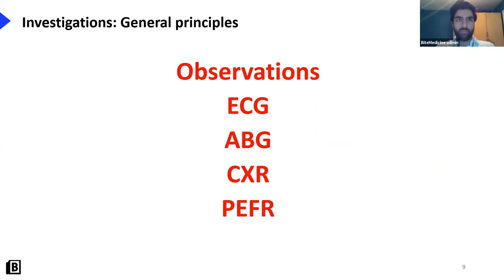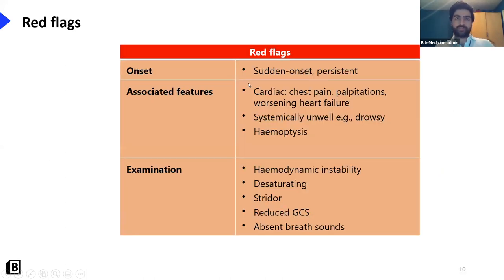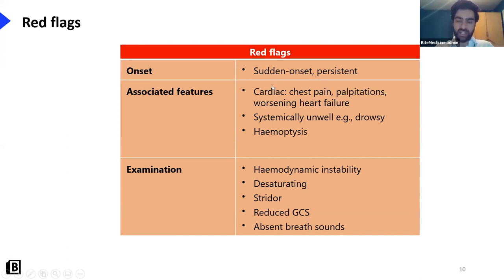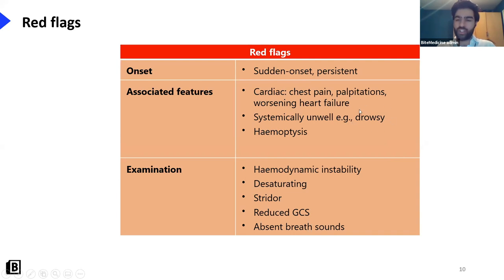Investigations depend on the condition, but start with observations: what are their saturations, what are their respiratory rate? Then ECG, ABG, chest X-ray, peak flow. Red flags: something that comes on quickly is more worrying than something that comes on slowly. Sudden onset persistent shortness of breath should raise a red flag. Cardiac symptoms like chest pain suggesting an MI, palpitations suggesting arrhythmia, or heart failure symptoms — again, red flags. Are they systemically unwell?